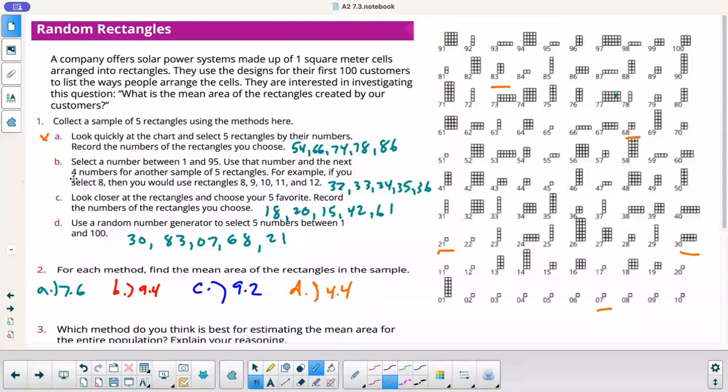Same with B. B is kind of all in the same area. So B is not good. This one is not random at all. You're just choosing your five favorites. So honestly, this is the best one right there, D.